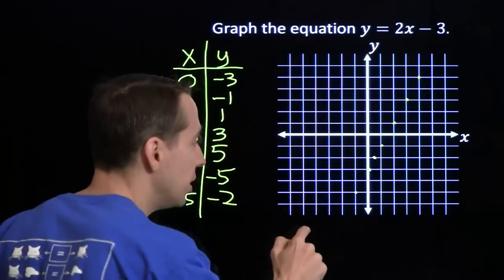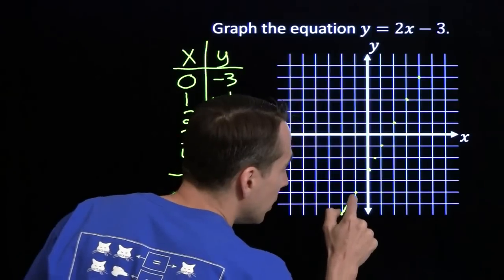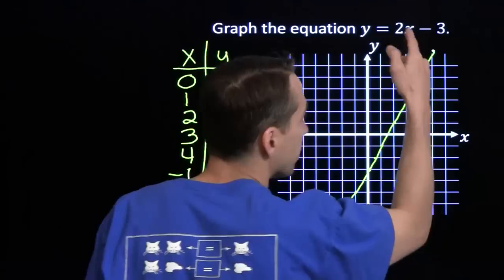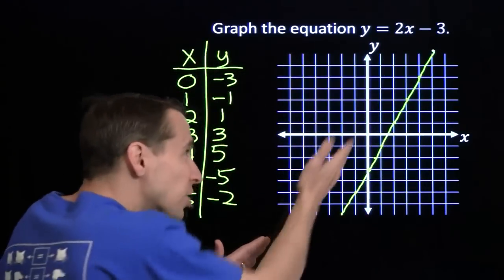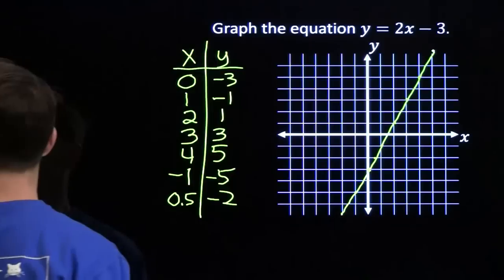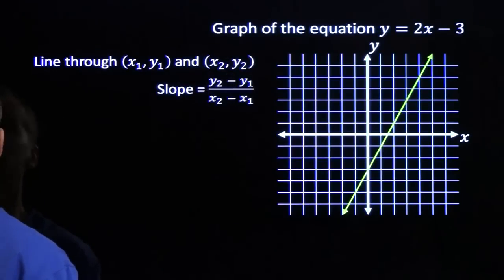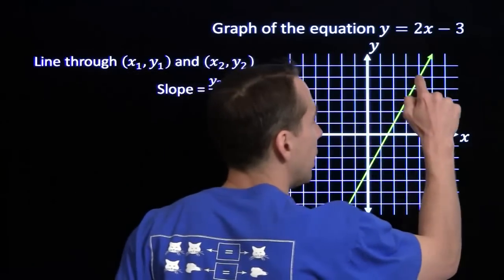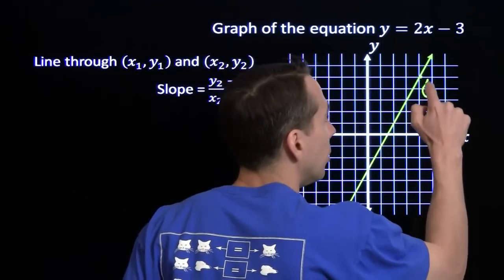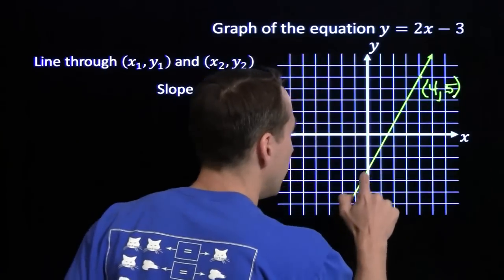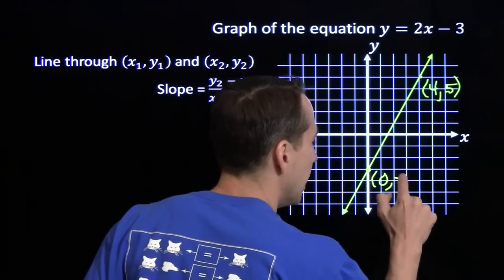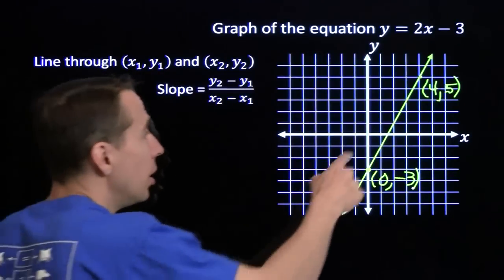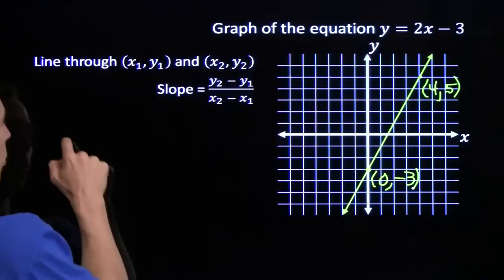I'm always moving in the same direction here. We can see that what's happening is we're tracing out a line. So the graph of this equation is this line. Now the direction of this line has a special name — we call the direction of that line the slope. To understand what's going on with the slope, we'll go ahead and compute the slope between pairs of points on this line.